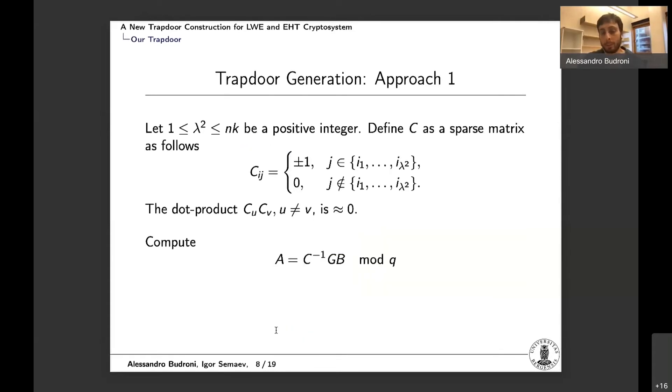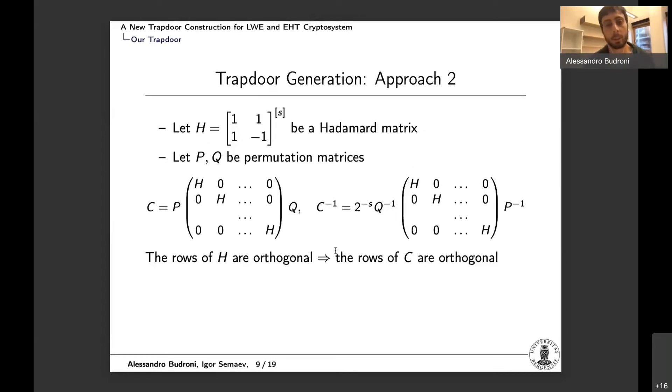So how to build such kind of structures? The first approach is the following. So we pick a parameter lambda that is the norm of the rows of C, the short matrix C, and C is built as a sparse matrix with entries at 0 plus 1 minus 1. And there are exactly lambda squared entries different from 0 in each row. And also we want for statistical reasons that the dot products between the rows is approximately 0. And then one can compute A equal to C inverse times GB, and then the A and C and B they respect the trapdoor equation. However, this approach has a drawback that C is very expensive to invert because we use Gauss elimination, but C is quite a big matrix, so it's slow.